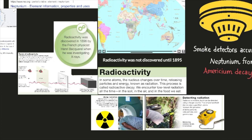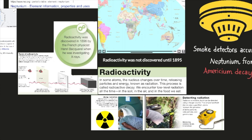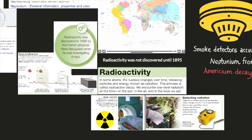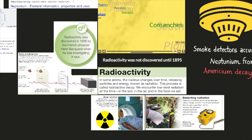Before we do that, here's some information on radioactivity. In some atoms, the nucleus changes over time, releasing particles and energy known as radiation. This process is called radioactive decay. We encounter low-level radiation all the time, in the soil, in the air, and in the food we eat.